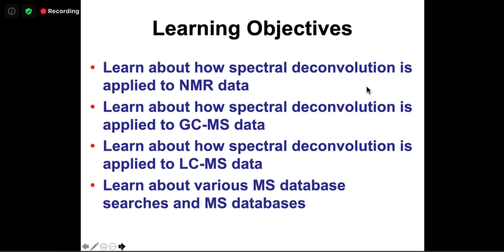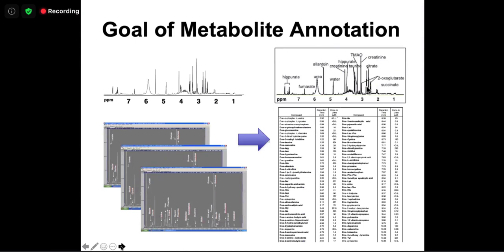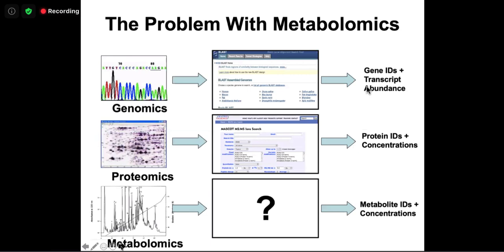You saw these slides before — this idea of annotation. Whether it's NMR spectra or mass spectra, you have a bunch of peaks and you don't know what those peaks mean. Metabolite annotation is all about identifying those peaks, producing either a picture with labeled peaks or a table with compound names and their concentrations or relative intensities. The goal is to annotate dozens to hundreds, hopefully one day thousands of compounds.